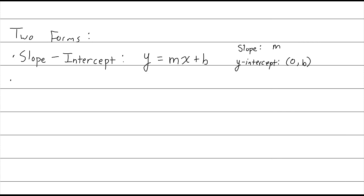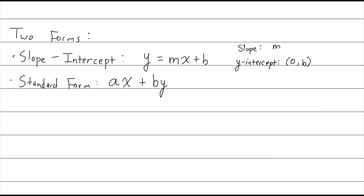We'll also talk about standard form, which just looks nicer than slope-intercept. Standard form is ax plus by equals c, where a is a positive whole number. B and c can be negative, but they're usually whole numbers as well — no decimals or fractions. So slope-intercept and standard form are our two key forms.